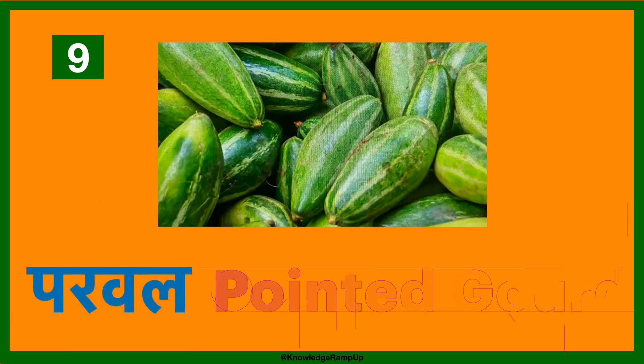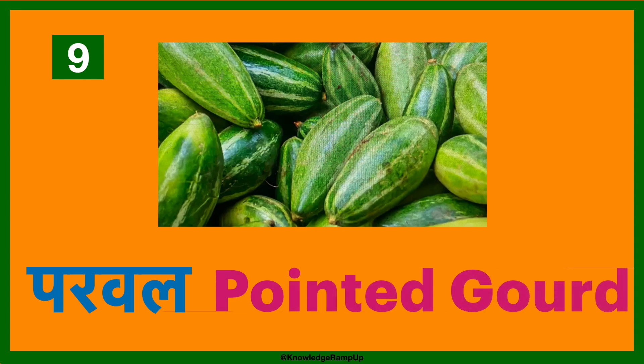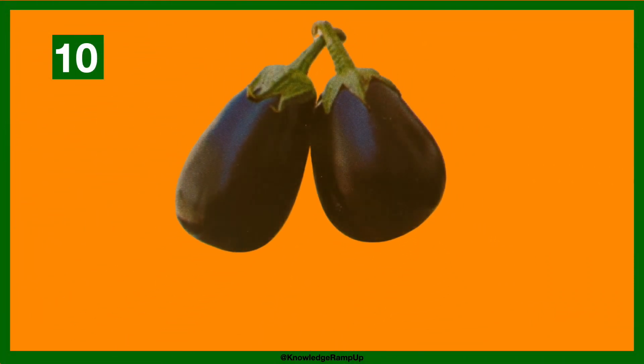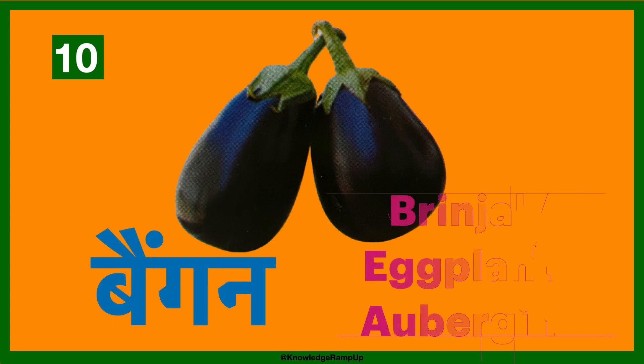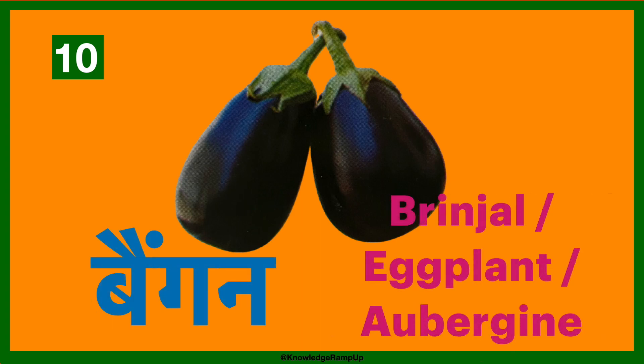Parwal — pointed gourd. Baingan — this one has three names in English: brinjal, eggplant, and aubergine.